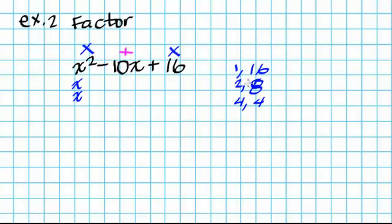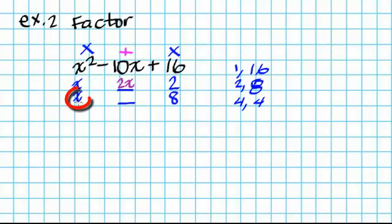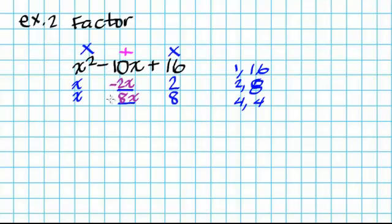I think I can use 2 and 8 as my factors. I multiply x with 2, which gives me 2x, and x times 8 gives me 8x. But I need them to add up to negative 10. Right now if I add them they're positive, so in order to add up to negative 10x, I have to switch the sign of both of them. If I switch the sign of the center terms, I also switch the sign of the terms on the right.